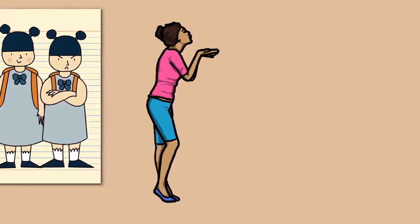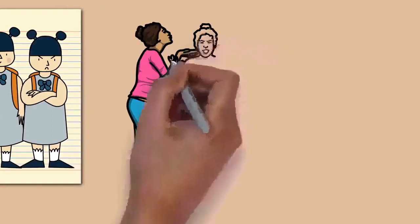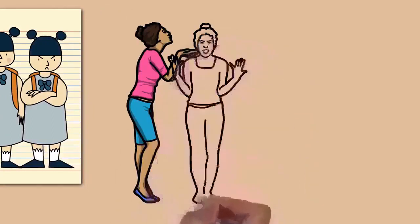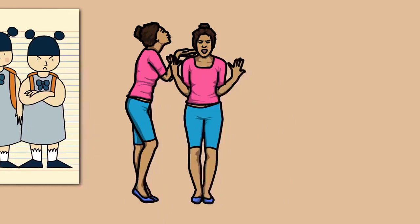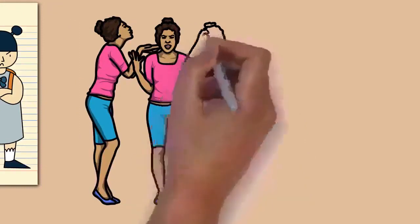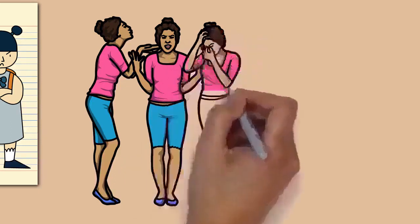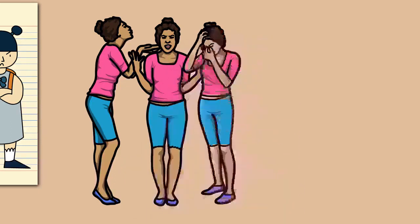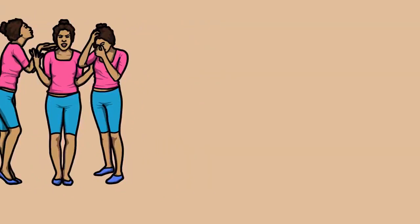Also known as a manic episode, mania is a distinct period of at least one week of elevated or irritable mood, which can range from euphoria to delirium. The core symptom of mania involves an increase in energy and psychomotor activity. Mania can also present with increased self-esteem or grandiosity, racing thoughts, pressured speech that is difficult to interrupt, decreased need for sleep, disinhibited social behavior, increased goal-oriented activities, and impaired judgment, which can lead to impulsive or high-risk behaviors such as hypersexuality or excessive spending.